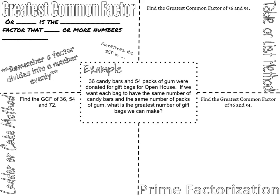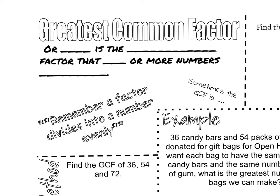Today we're going to be taking a look at different ways that we can find the greatest common factor of a set of numbers. Please make sure you either split your screen to take your notes in Notability or have a printout of this note page so that you can fill it out as I go. We're going to start in this upper left hand quadrant. The greatest common factor, or GCF, is the largest number or largest factor that two or more numbers share. A factor is a number that divides into a number evenly.